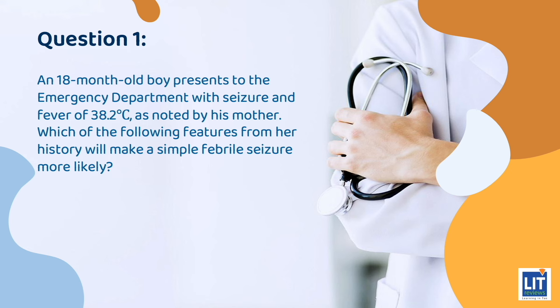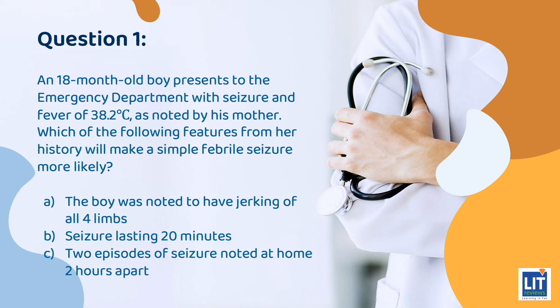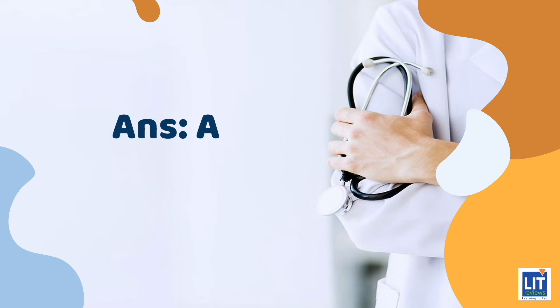Quiz time! Question 1: An 18-month-old boy presents to the emergency department with a seizure and a fever of 38.2 degrees Celsius. Which of the following features from the history will make a simple febrile seizure more likely? A. The boy was noted to have jerking of all four limbs. B. The seizure lasted 20 minutes. C. Two episodes of seizure noted at home two hours apart. Or D. Previous history of a febrile seizure. The answer is A — the boy was noted to have jerking of all four limbs.